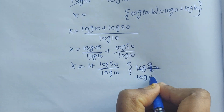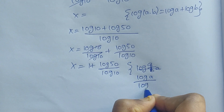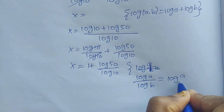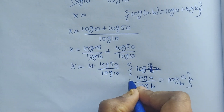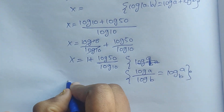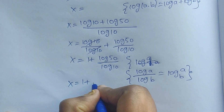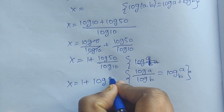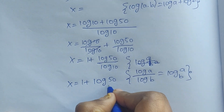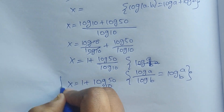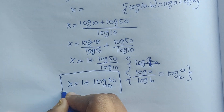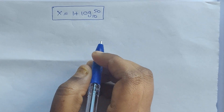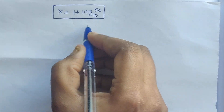Using the formula log a divided by log b equals log of a base b, we get x equal to 1 plus log of 50 base 10. This is the x value.